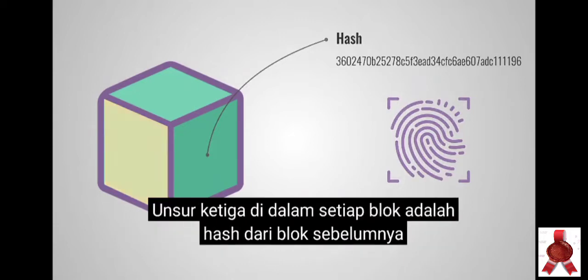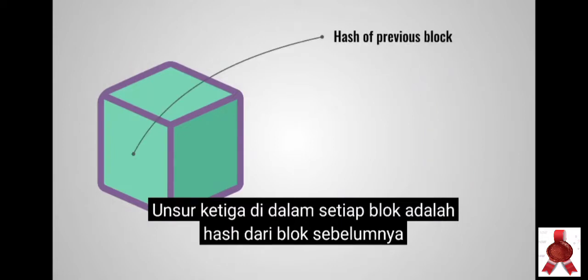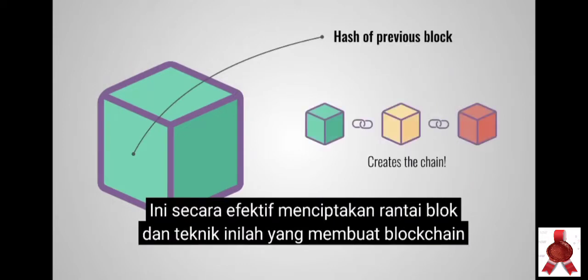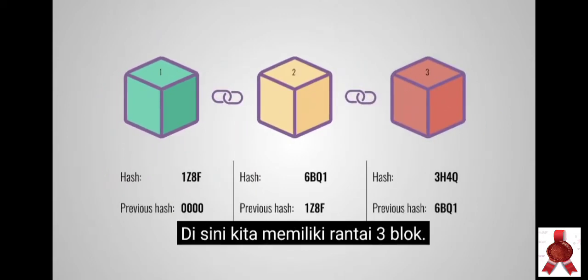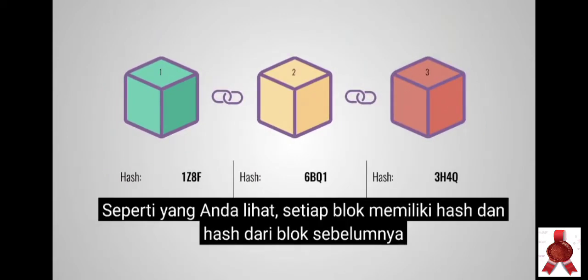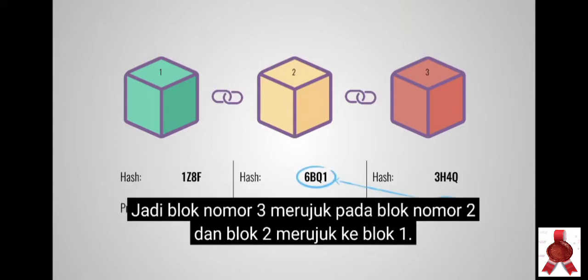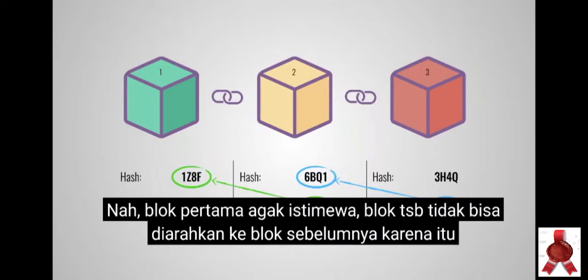The third element inside each block is the hash of the previous block. This effectively creates a chain of blocks, and it's this technique that makes a blockchain so secure. Here we have a chain of 3 blocks. Each block has a hash and the hash of the previous block. Block number 3 points to block number 2 and number 2 points to number 1. The first block is a bit special — it cannot point to previous blocks because it's the first block.